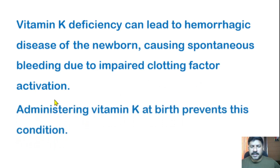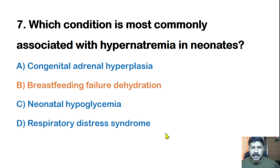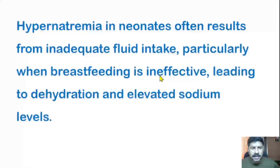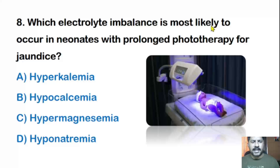Seventh question: Which condition is most commonly associated with hypernatremia in neonates? Options: congenital adrenal hyperplasia, breastfeeding failure/dehydration, neonatal hypoglycemia, or respiratory distress syndrome. The correct answer is breastfeeding failure and dehydration. Hypernatremia in neonates often results from inadequate fluid intake, particularly when breastfeeding is ineffective, leading to dehydration and elevated sodium levels as the blood becomes concentrated.